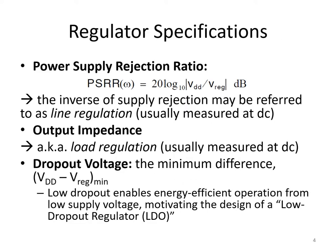Here are some of the primary specifications of voltage regulators. First, the power supply rejection ratio. This measures the ratio of variations on the overall supply voltage VDD to variations in the output voltage VREG. Notice that these quantities are small signal quantities—that is, they're deviations in VDD and VREG away from their nominal values. They can be thought of as small signal or AC quantities.